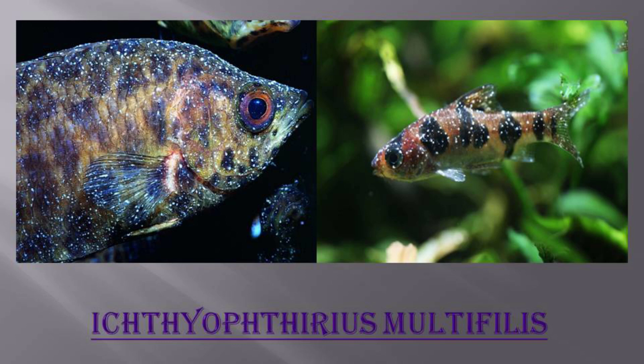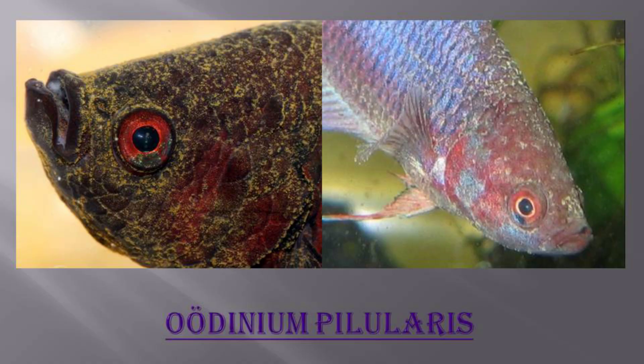Third, Ichthyophthirius multifiliis — small white spots resembling sand on the skin of the fish are observed, and the fish scratches against objects. Fourth, Oodinium (velvet or gold rust disease) — a fine yellow or rusty colored film on the skin giving a velvety appearance. Fish becomes lethargic and scratches its body against hard surfaces. This condition is caused by a parasite.